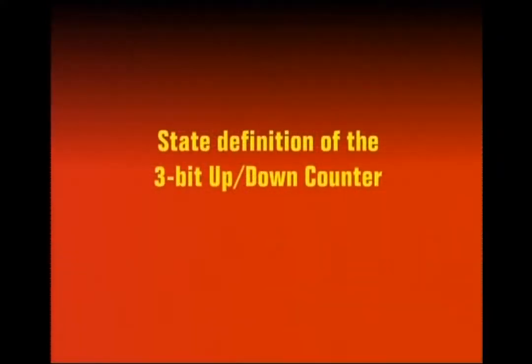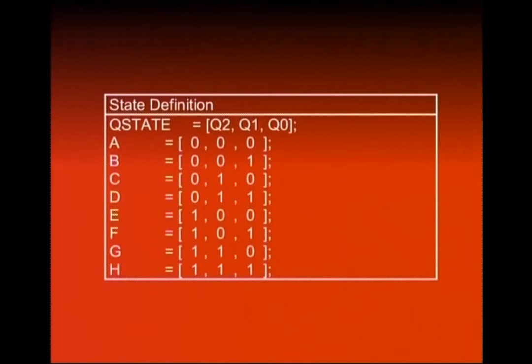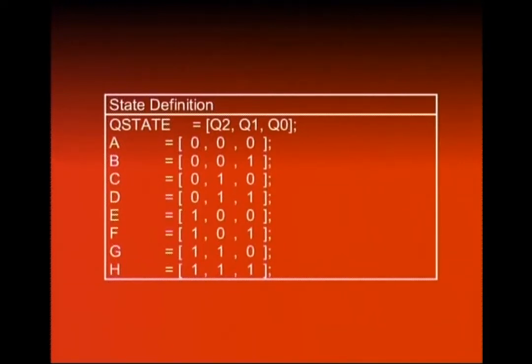Aaye dekhte hain is state diagram ki definition ko 3-bit up and down counter ke liye. Table mein state defines ki gayi hain — 8 states ko represent kiya hai A se H tak. A = 000, B = 001, aur H = 111. Q state variable define kar diya hai jo 8 states ko define karta hai — Q2, Q1, Q0 koi bhi naam ho sakte the, yeh basically state variables hain.